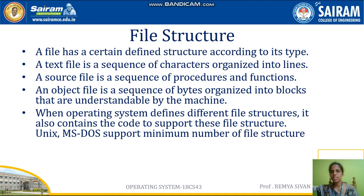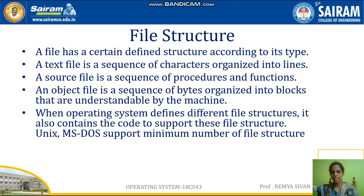File structure: a file has a certain defined structure according to its type. For example, if your file type is .c, then the information should be a sequence of procedures and functions. That is the structure of .c files. If the extension of the file is .txt, that indicates it is a text file, and the content should be a sequence of characters organized into lines. That is the structure of .txt files.